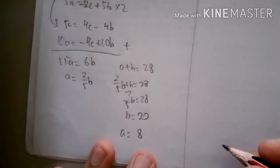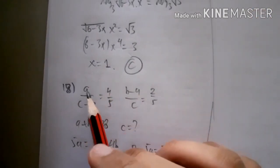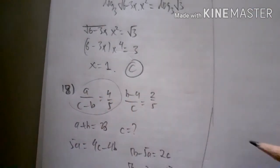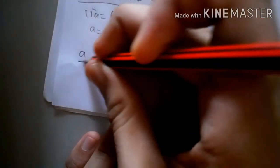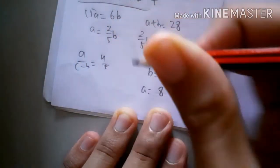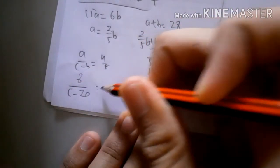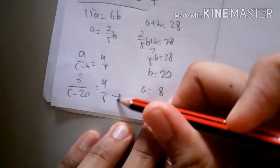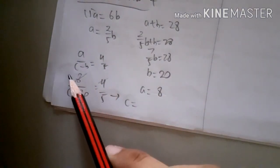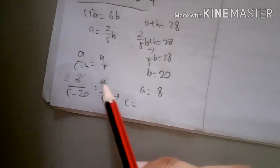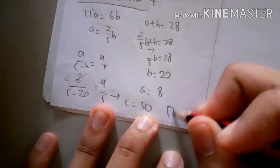Now we find c using a/(c - b) = 4/5 with a = 8 and b = 20: 8/(c - 20) = 4/5, so 40 = 4(c - 20), giving 4c = 80, thus c = 30. The answer is option D.